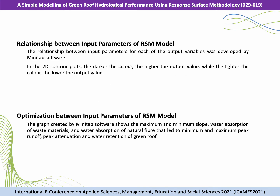The relationship between input parameters for each of the output variables was developed by MINITAB software. In the 2D contour plot, the darker the color, the higher the output value, while the lighter the color, the lower the output value. The optimization graph created by MINITAB software shows the minimum and maximum slope, water absorption of waste materials, and water absorption of natural fiber that lead to minimal and maximum peak runoff, peak attenuation, and water retention of the green roof.